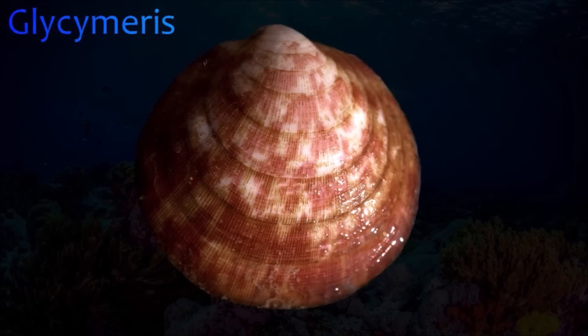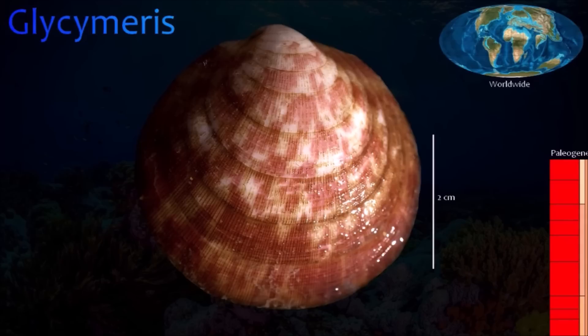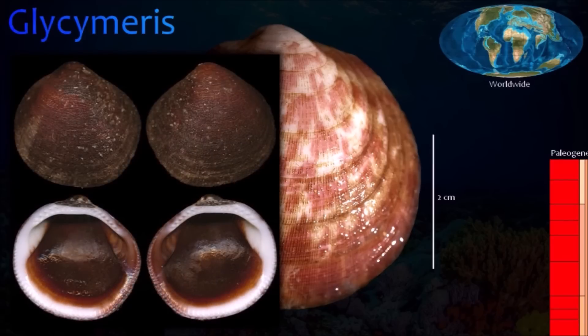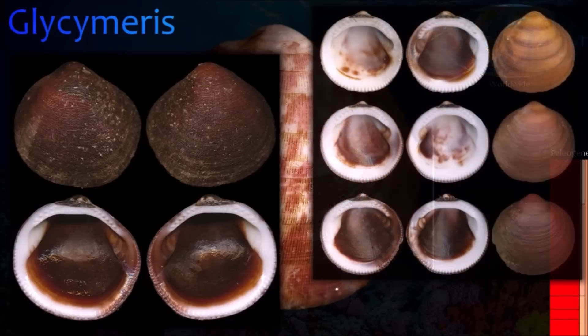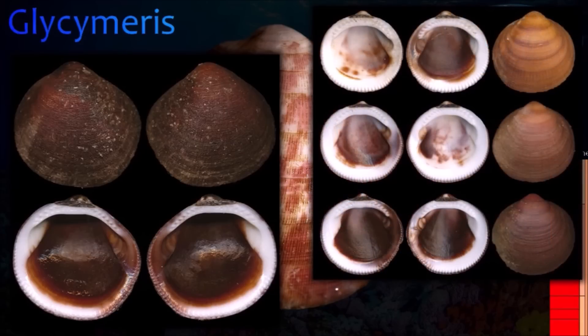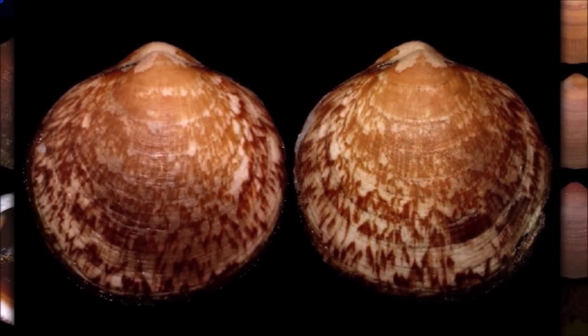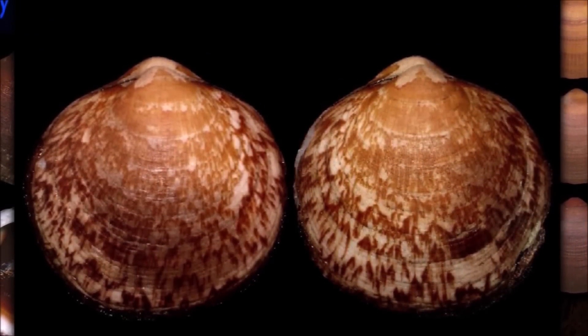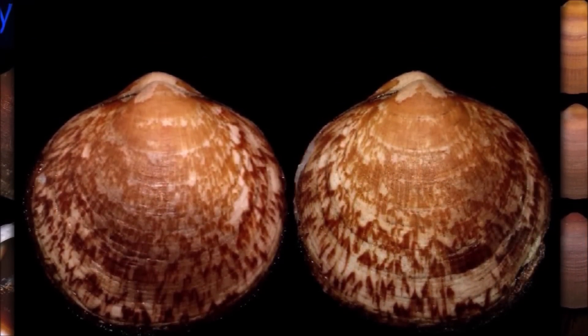Glycemaris is a fairly thick-shelled bivalve with an almost circular outline. Its beaks are situated more or less centrally on its midline. Beneath the beaks, extending both to the front and rear, there is a large triangular area marked with tiny grooves where the ligament was housed. Beneath the ligamental area is the hinge plate, which has numerous teeth and sockets that are smallest beneath the beaks but become markedly larger and more curved as they follow the hinge margin around the outer curve.